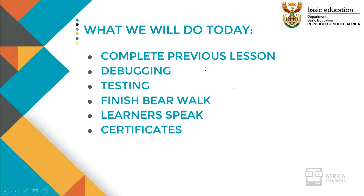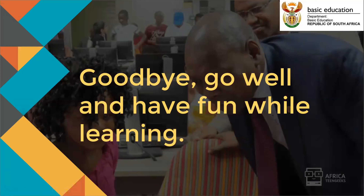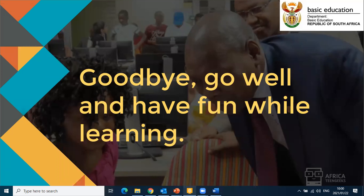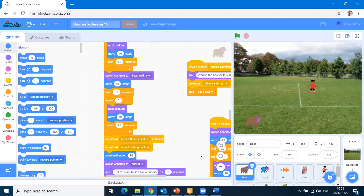Yesterday we basically did our game — we started with Ben and Bear going to run around the screen. We're going to fix that program and finish it. Certificates won't be handed out now, but this afternoon at quarter past two we'll have the certificates. You log in online, get the Zoom link, and join that meeting. Remember, it's quarter past two that it starts — not three, not half past two.